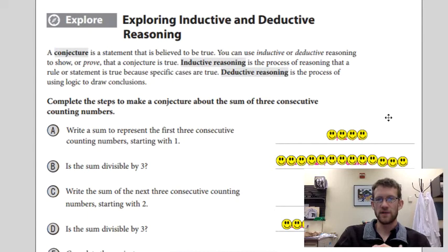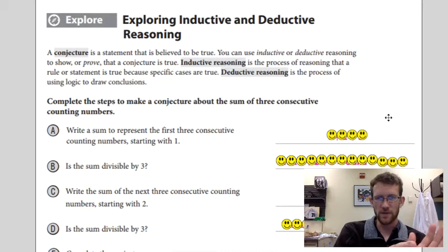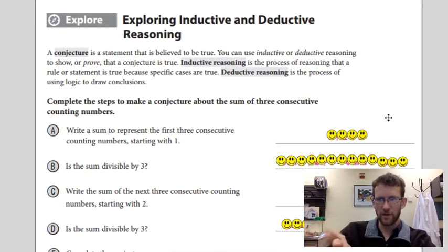Deductive reasoning is a little bit more about logical steps. So I would say something like, oh, all mammals give birth to live young, all right? And then you'd say, oh, a horse gives birth to live young, therefore a horse is a mammal or something like that. Not the best example, but we'll do some more examples here.